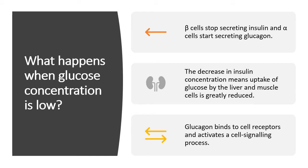When glucose concentration is low — especially if you've been depriving yourself of food — the beta cells from the islets of Langerhans stop secreting insulin, and instead the alpha cells start to secrete glucagon. Glucagon is a hormone that enables the breakdown of glycogen to glucose. When you go out for exercise early in the morning without having eaten, your blood glucose concentration is likely low, so glucagon gets to work — it goes into the muscles and enables muscle cells to break down the stored glycogen into glucose so you can carry out respiration and have energy.